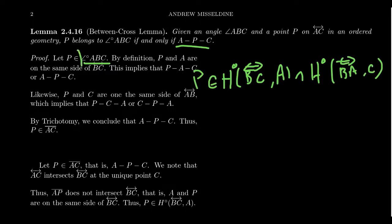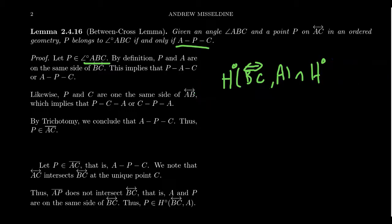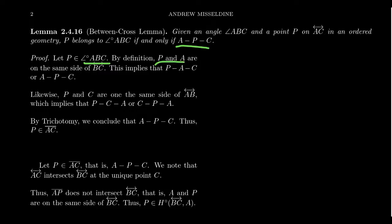In particular, we know that P and A are on the same side of line BC. We also know that C and P are on the same side of line BA. That's what it means to be inside those open half planes.